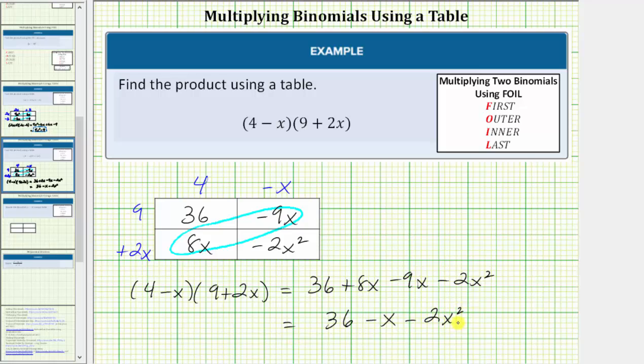So this is our product, and it is in simplest form, but sometimes the terms are written in descending order, meaning this can also be written as negative 2x squared minus x plus 36. The two expressions are equivalent, and both are correct. I hope you found this helpful.